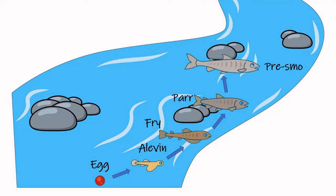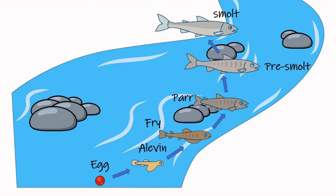The parr begins to move downstream as it grows from a pre-smolt into a smolt. It loses its markings and turns silver with harder scales. Soon it will be ready to enter the ocean.